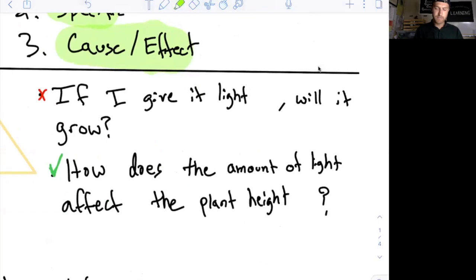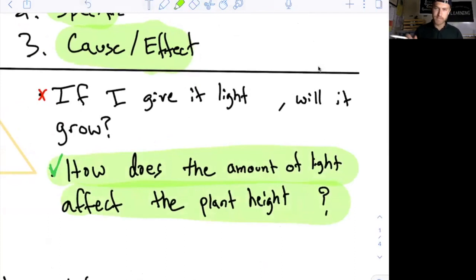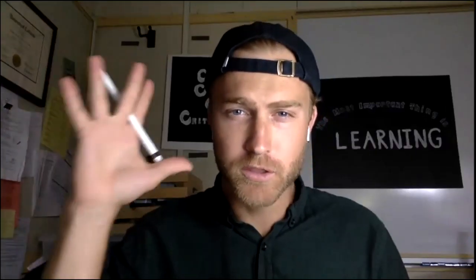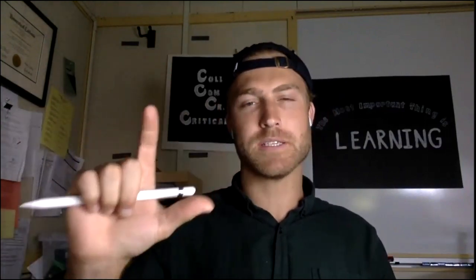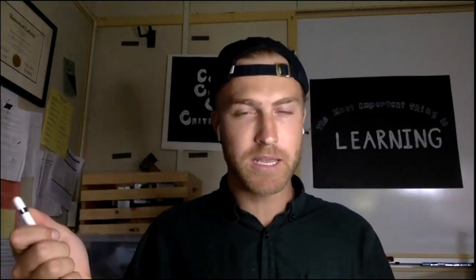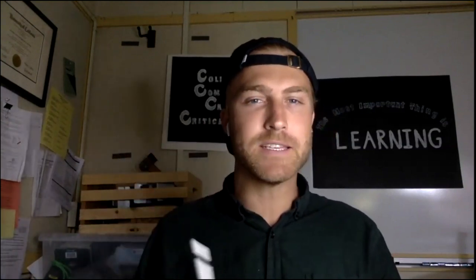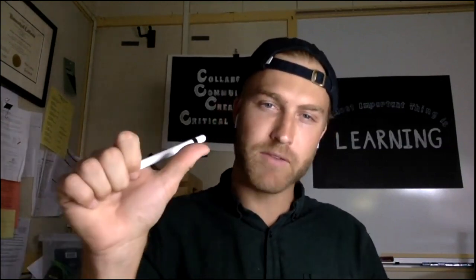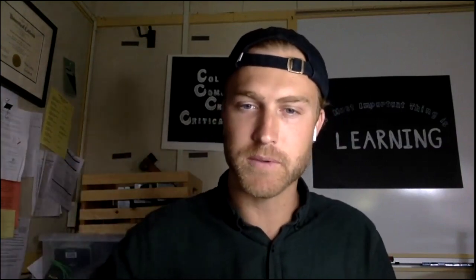Let's analyze this for some important key ingredients. When we're asking a scientific question, we want to make sure it has an independent variable and a dependent variable. Those are two new words. Independent variable and dependent variable are the main parts of any scientific experiment. We asked the question; now we want to make sure we have a good experiment, and for that you need to identify what's the independent variable and what's the dependent variable.